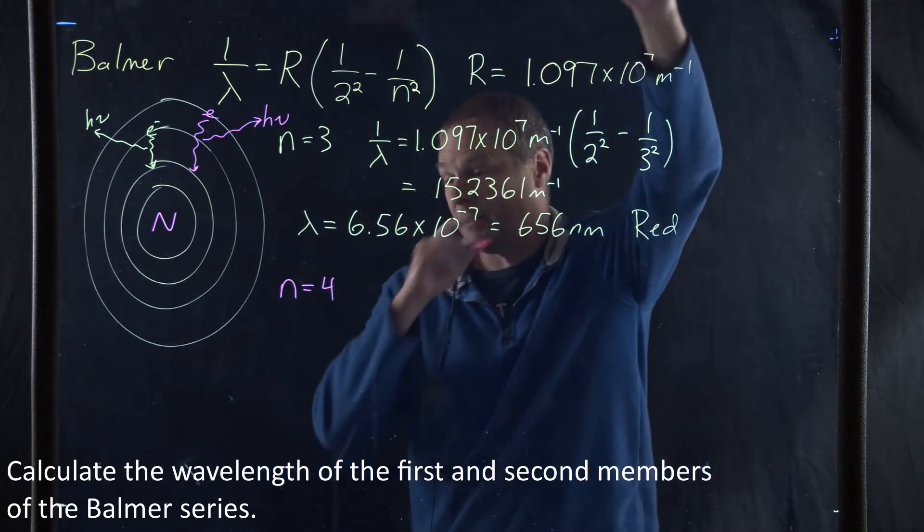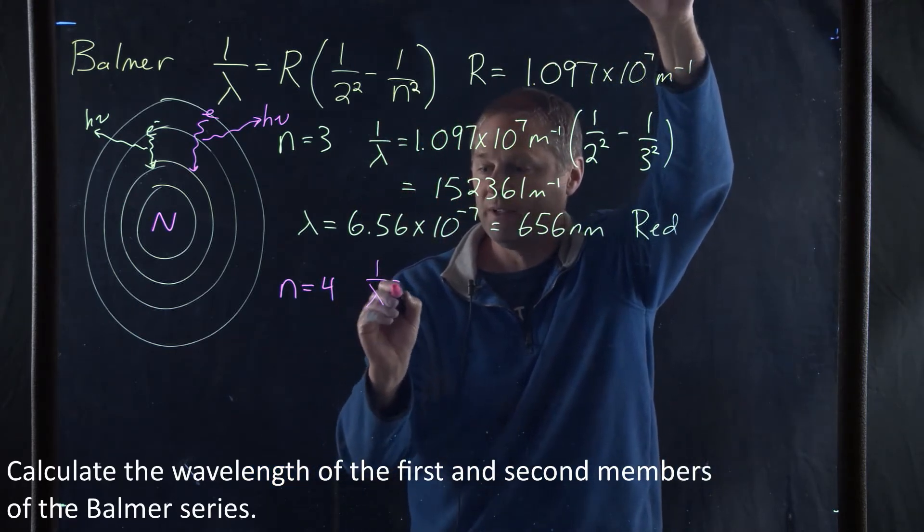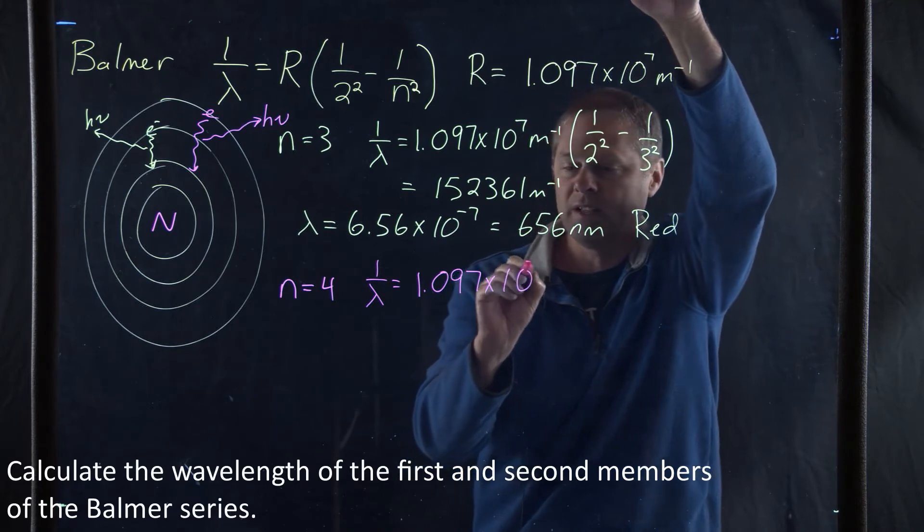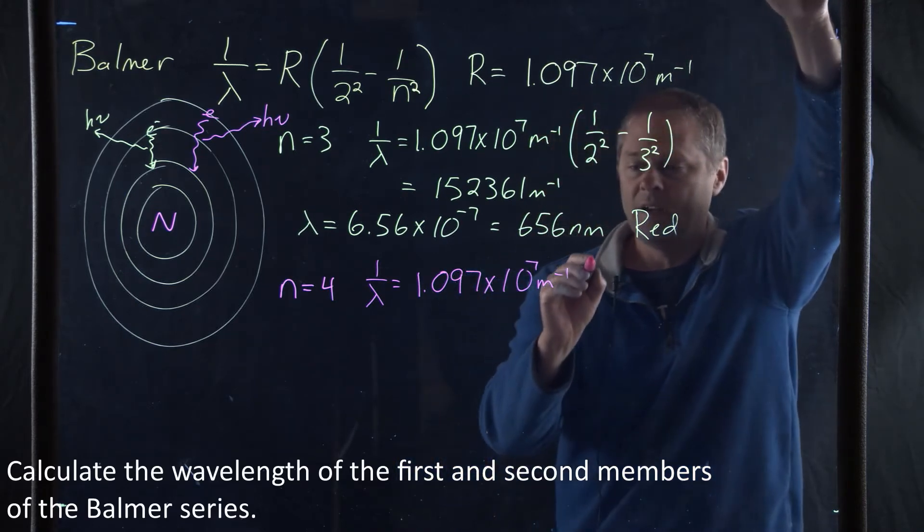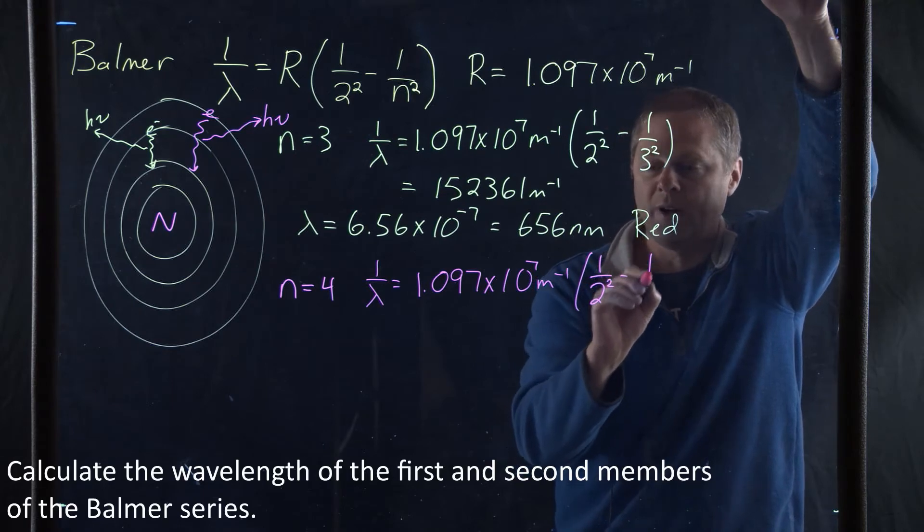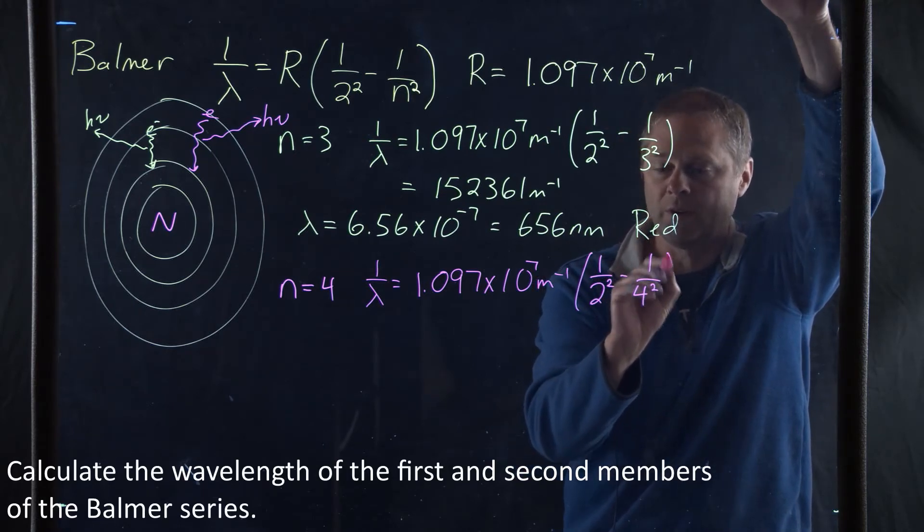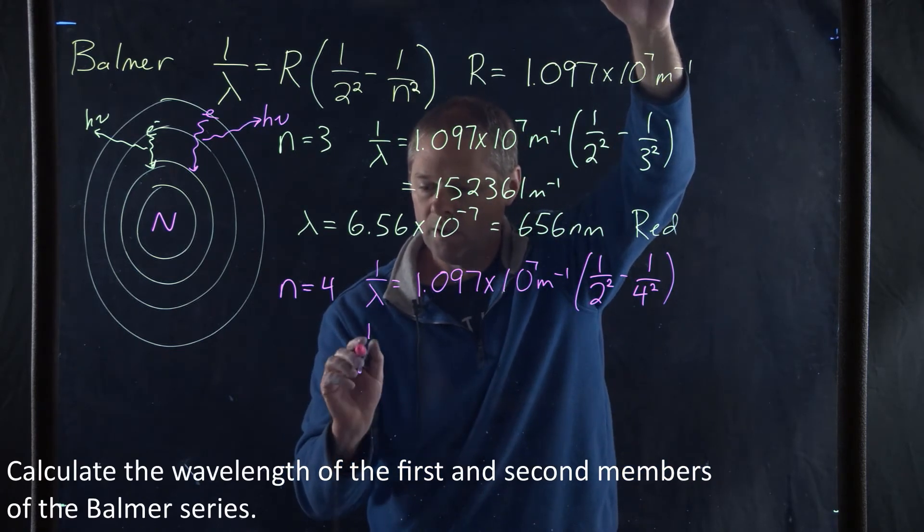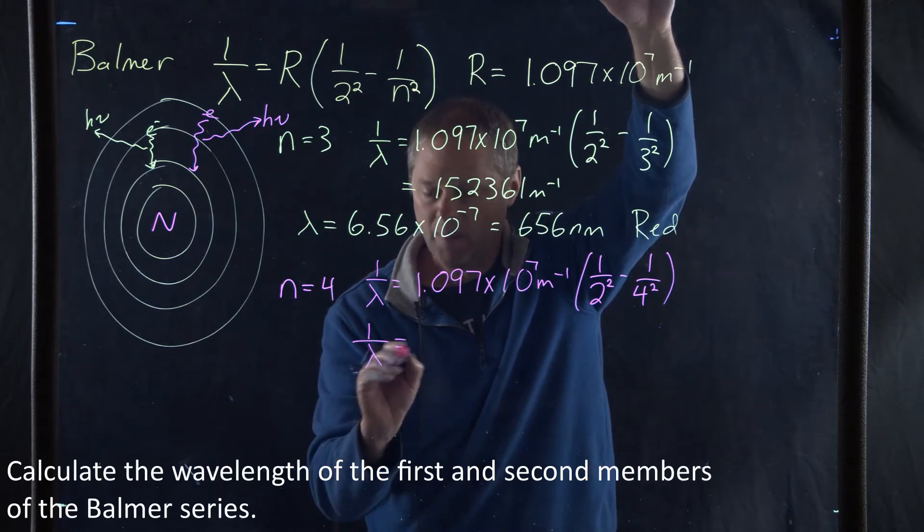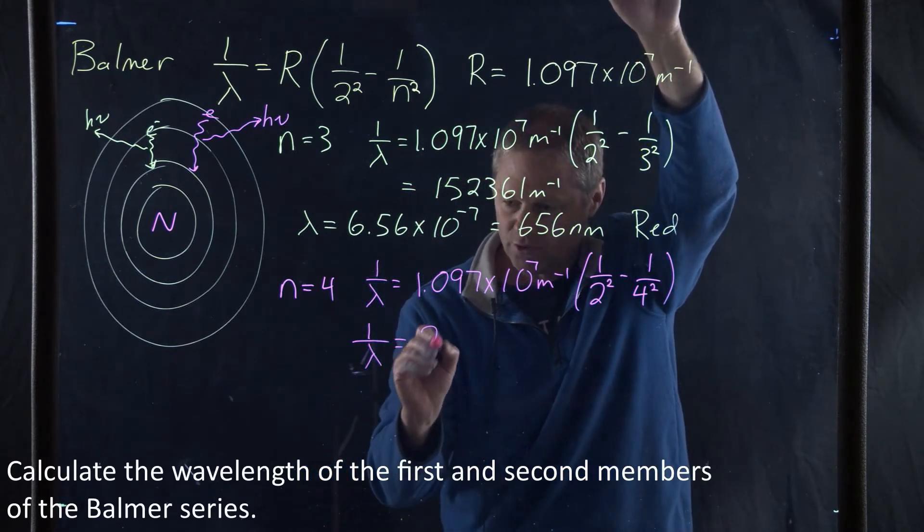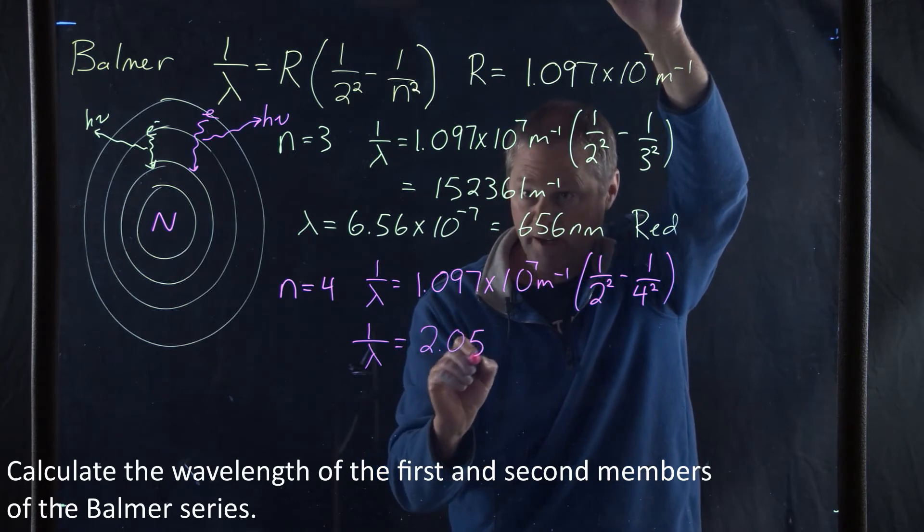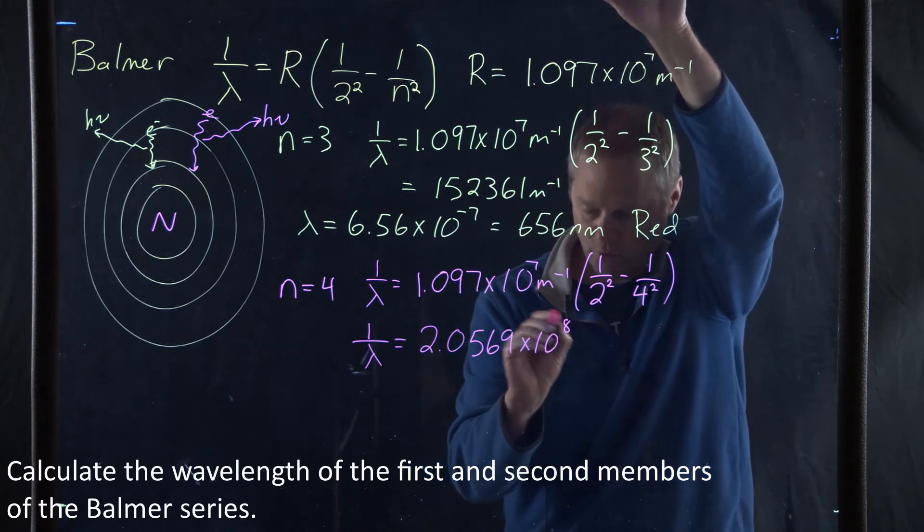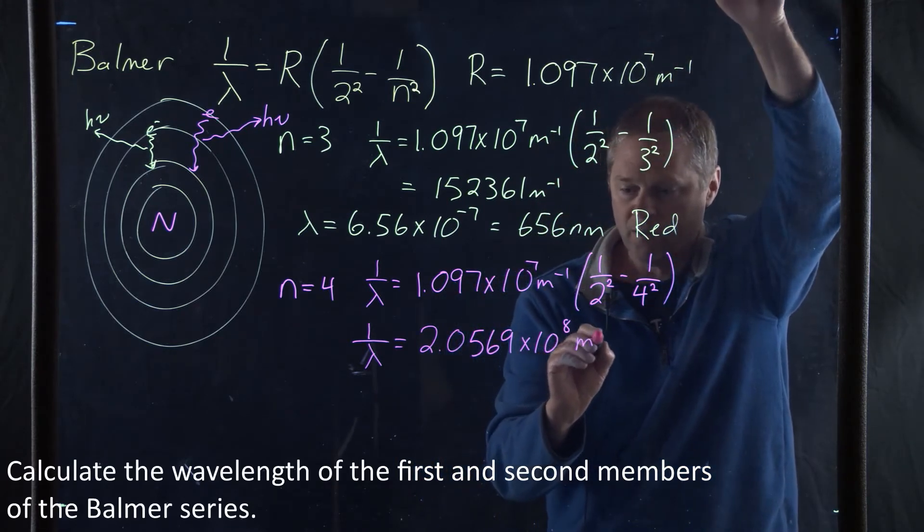Well, we're going to use the exact same equation. So it's going to be 1 over lambda is equal to the Rydberg constant, which is 1.097 times 10 to the 7th inverse meter times 1 over 2 squared minus 1 over 4 squared.